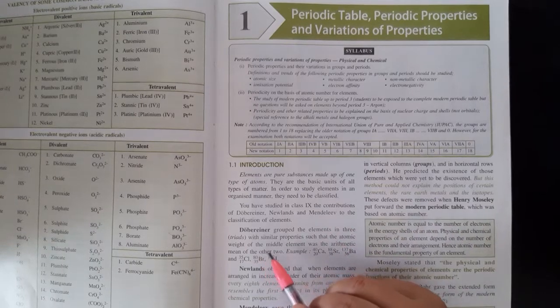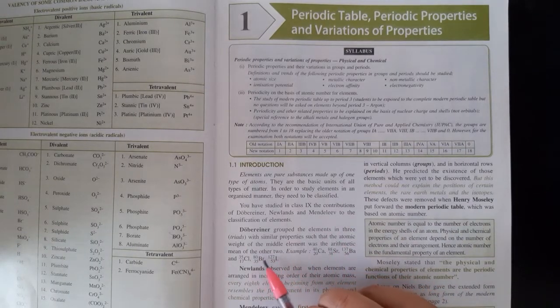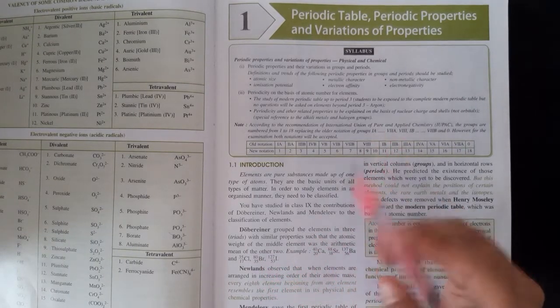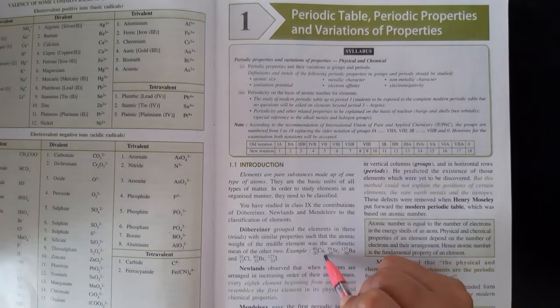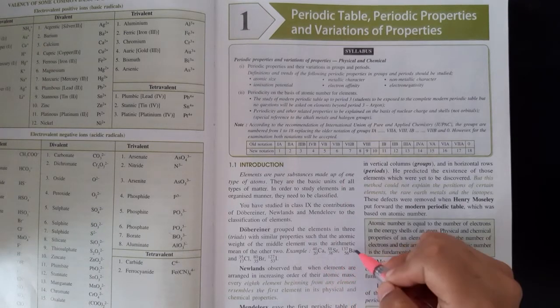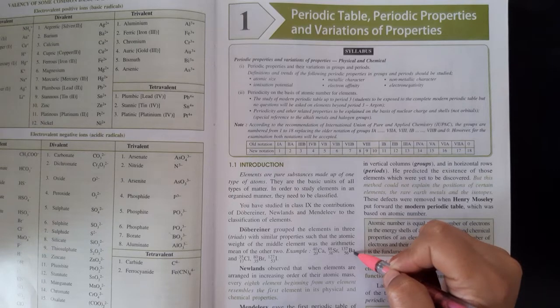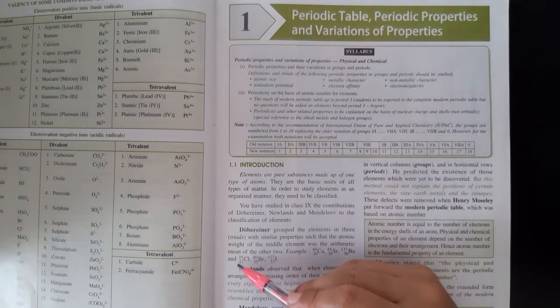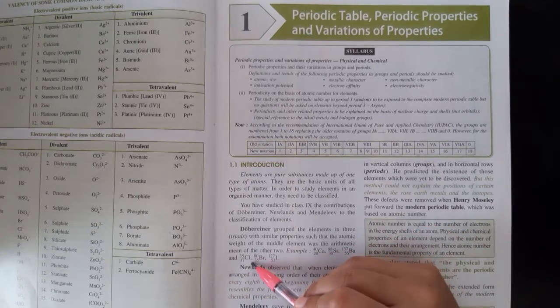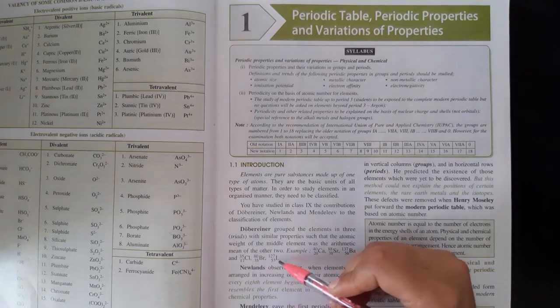Such that the atomic weight of the middle element was the arithmetic mean of the other two. For example: Calcium, Strontium and Barium. Second example: Chlorine, Bromine and Iodine. Now I show you how.